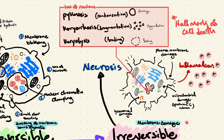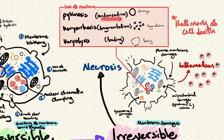Membrane damage is a hallmark of irreversible injury. There can be plasma membrane damage causing the release of intracellular components, leading to excessive inflammation in necrosis. There may be mitochondrial damage leading to the release of cytochrome c, which is an important player in apoptosis. We could also have lysosomal membrane damage causing release of catabolic or digestive enzymes. Finally, the hallmark of cell death is loss of the nucleus. There are three main processes by which cells lose their nucleus: pyknosis (condensation, where the nucleus shrinks until it disappears), karyorrhexis (fragmentation into tiny pieces), and karyolysis (the nucleus fades away).